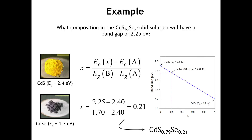Looking at a graph assuming a perfect Vegard's Law evolution, you can see that x = 0.21 does come in right at a band gap of 2.25. It's easy to get confused about whether this should be selenium 0.21 or sulfur 0.21 — what's the 1 minus x and what's the x. But as a reality check: because 2.25 is much closer to 2.4 than it is to 1.7, we know that the composition must be sulfur-rich, which is consistent with the answer we obtained.